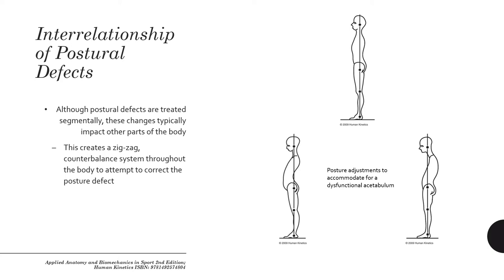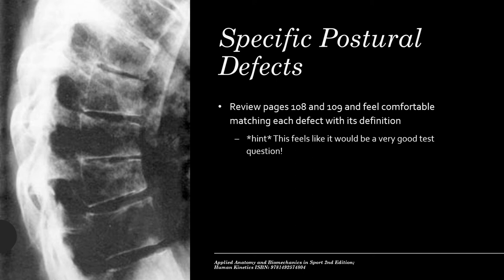There is also an interrelationship between postural defects and our ability to work effectively within our body. We typically discuss postural defects segmentally — a shoulder out of place, unbalanced hips — but even though we look at them segmentally, they impact other parts of the body. There's a zigzag counterbalance system that moves through the body attempting to correct the defect. For example, a slightly elevated left hip tends to produce issues in the right shoulder, which causes issues in the left side of the neck, which may also cause issues in the right foot.